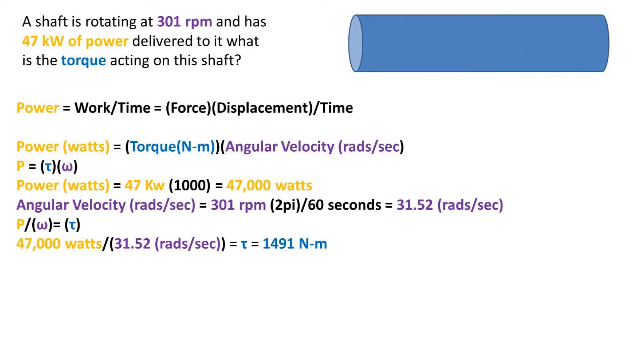Now to check our work, let's solve for all of the other variables only using two of the variables. So to solve for power, we use the formula, power equals torque times the angular velocity. And plug in our torque and angular velocity. We get around 47,000 watts for our answer. There might be some variation due to rounding.